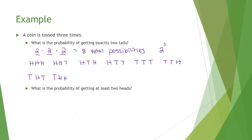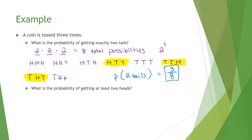We've got all eight possibilities there. Which ones have two tails? There are two tails here, two tails there, two tails there. So there are three ways to get two tails. The probability of two tails is three out of eight, because there are three ways to get it out of eight total possibilities.